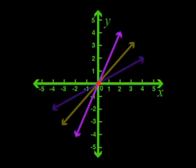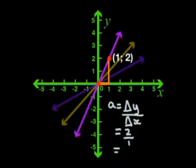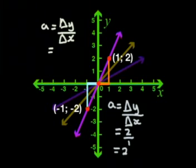On this graph, if we move one unit to the right from the origin, we have to move two units up to reach the graph. So change in y divided by change in x is 2 divided by 1, that's 2. Or I could go the other way — one unit left and two units down to reach this graph. That gives negative 2 divided by negative 1, which is positive 2.